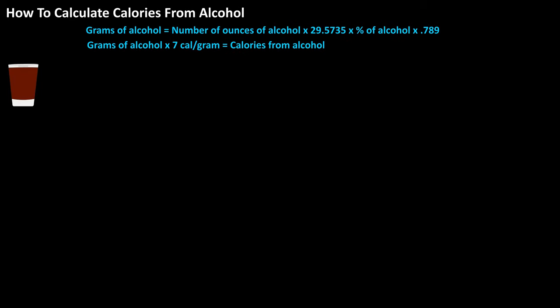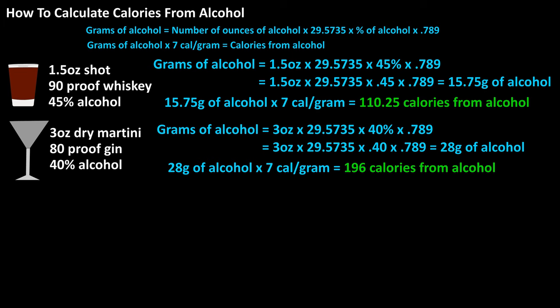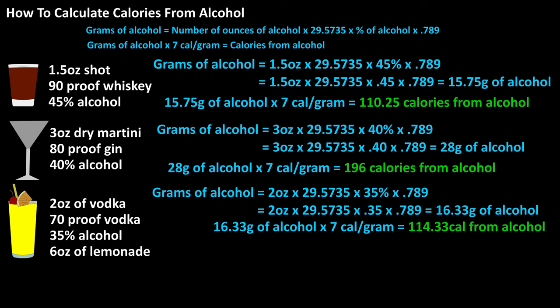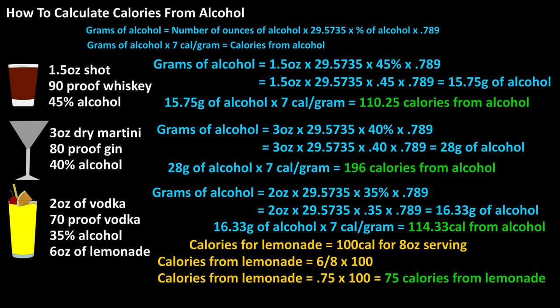Now let's look at hard liquor. Hard liquor alone does not contain any carbs, protein, or fat. Here's an example for a 1.5-ounce shot of 90-proof whiskey and a straight-up dry 3-ounce 80-proof gin martini. For mixed drinks, you have to account for both the alcohol and the mixer. For a 2-ounce pour of 70-proof vodka mixed with 6 ounces of lemonade: the vodka calories are shown on screen at 114.33. The lemonade label lists 100 calories per 8-ounce cup, so for 6 ounces we divide 6 by 8 to get 0.75, then multiply 100 by 0.75, giving 75 calories from lemonade. Adding 114.33 plus 75 equals 189.33 total calories for this mixed drink.